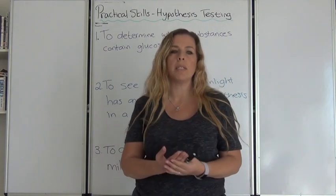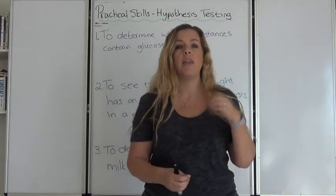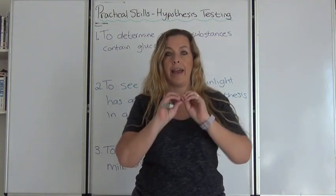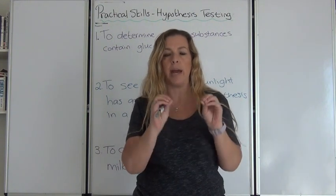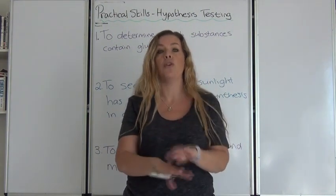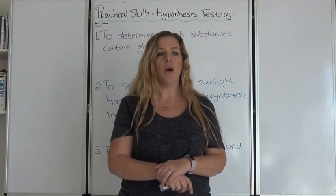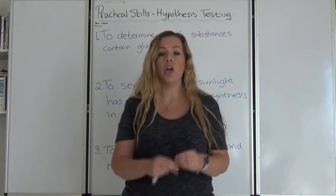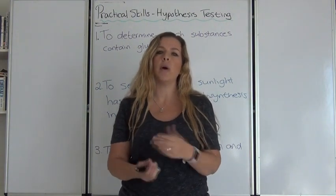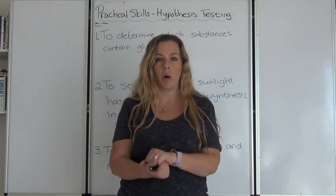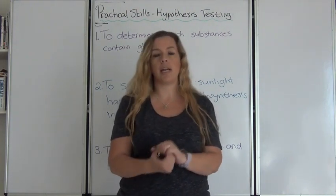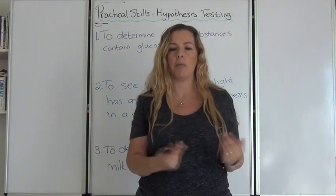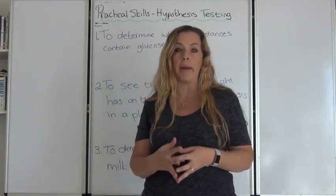What is so important about the aim is that you can deduce from it the hypothesis, the independent variable, and the dependent variable. So you need to look at that aim, dissect it, and understand it so it will work for you for the entire practical. I've given three possible aims of experiments and we're going to use these aims to create a hypothesis and work out the independent and dependent variables. I can't do three total experiments so you're going to have to use your imaginations a little bit, but I'll help you along the way.